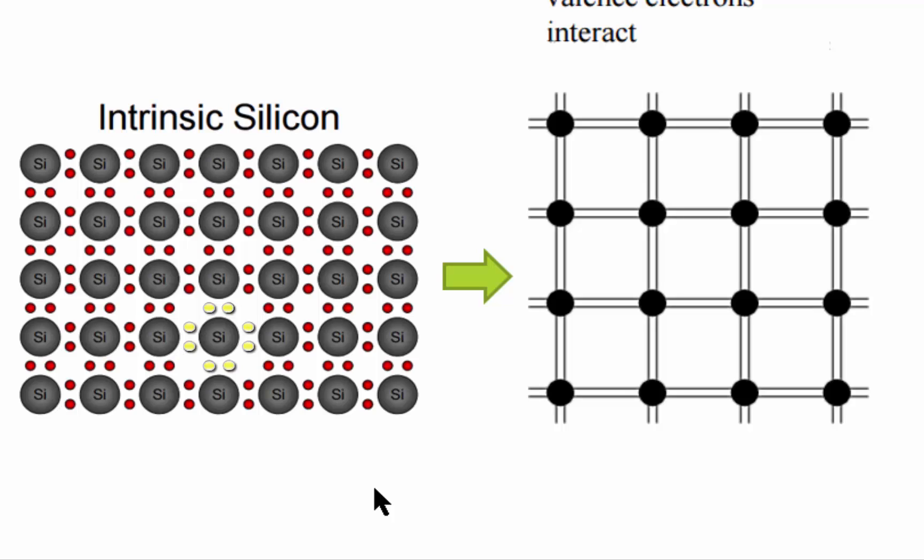The valent bonds are represented as two dots between a pair of neighbors. We can simplify this model even more by representing the core as a circle and each valent bond as a line.